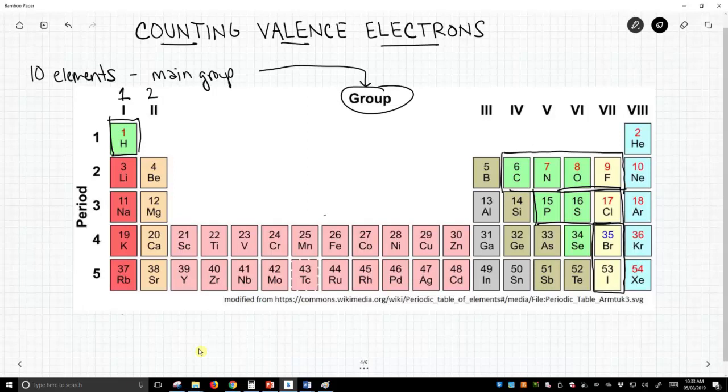So this is group 1, there's group 2, and then we skip some, and we get 3, and it goes all the way to 8. Now fortunately, our group number equals the number of valence electrons that we have.